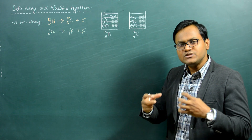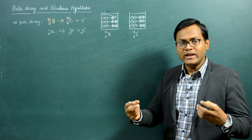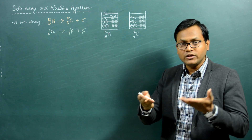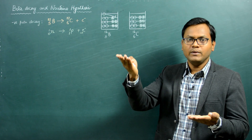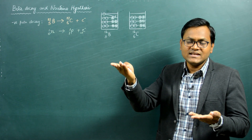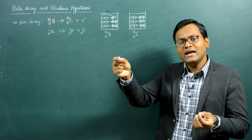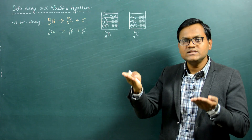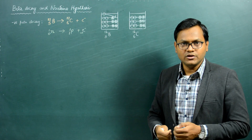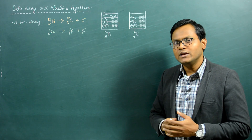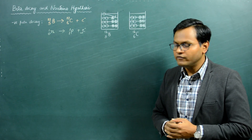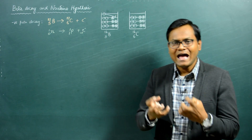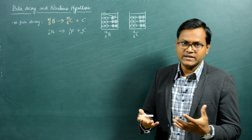This is what happens in the beta decay process: whenever a neutron or a proton is occupying a higher energy level because they are in excess, they may get converted to the other kind of particle, thereby decreasing the overall energy of the system and increasing the stability of the nuclear configuration. This is why beta decay reactions happen in the first place.